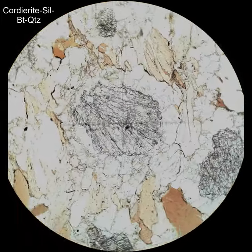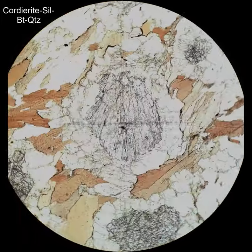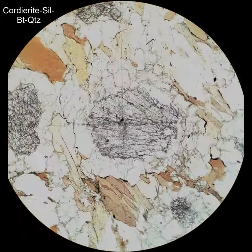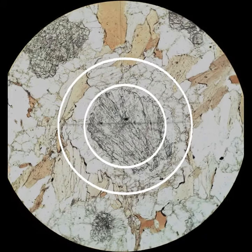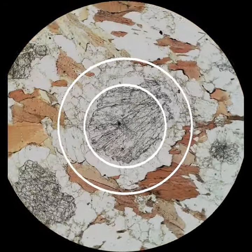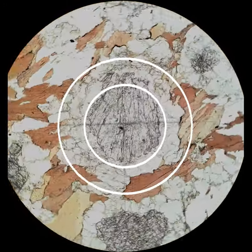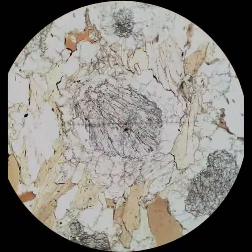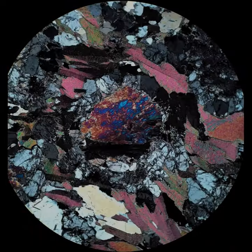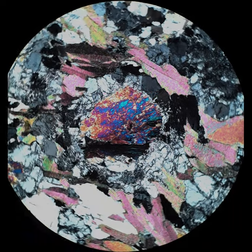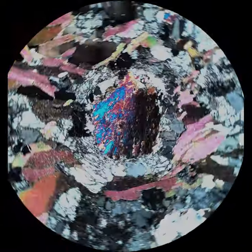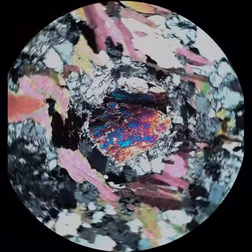This is a clot of solomonite surrounded by a moat of quartierite. I've put circles around the solomonite in the center and the quartierite. The quartierite has low relief and looks a lot like quartz. When you cross the polars, it has black and white interference colors and still looks a lot like quartz.